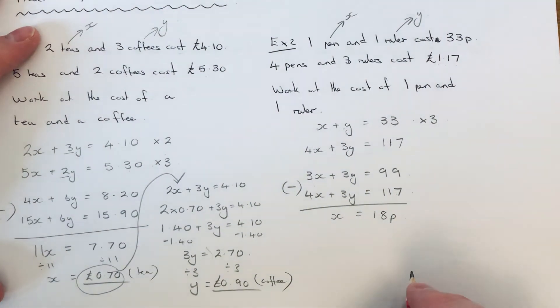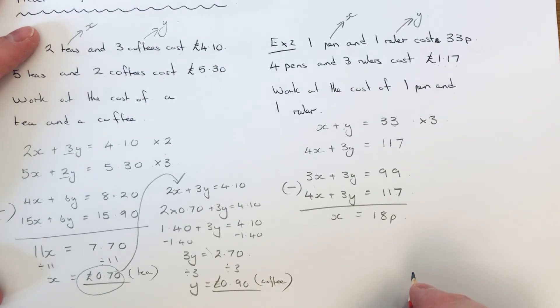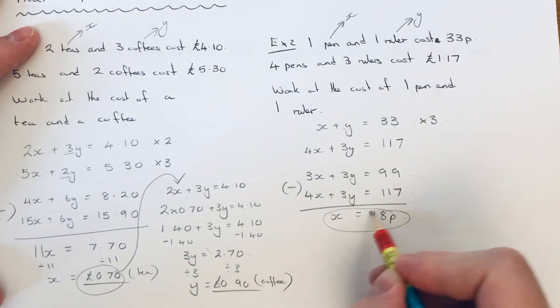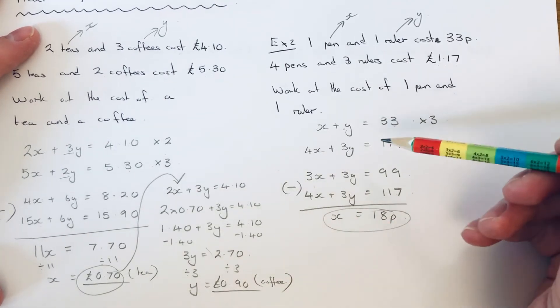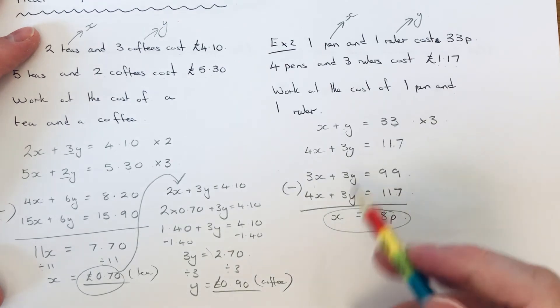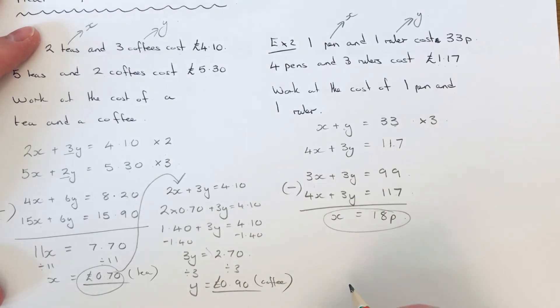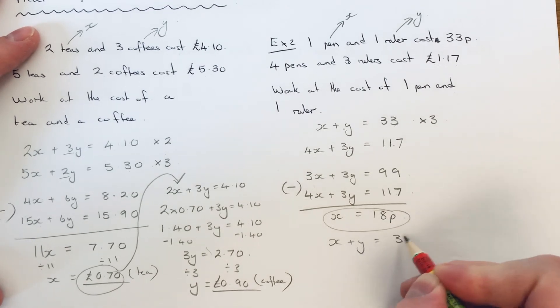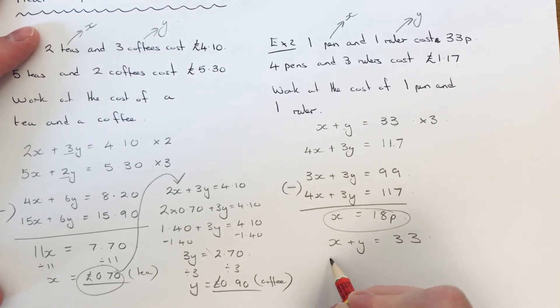Okay so let's have a look at working out the cost of a ruler. So we just need to substitute this answer back into one of the first two equations. So obviously let's go for the first one. So let's just write that one out.